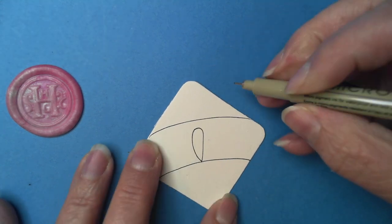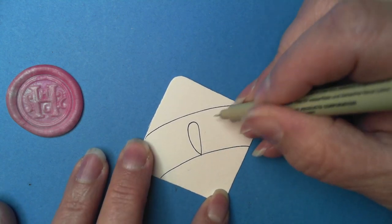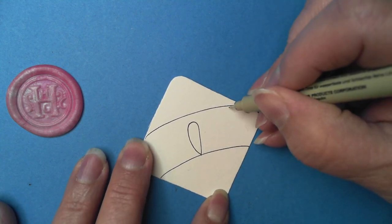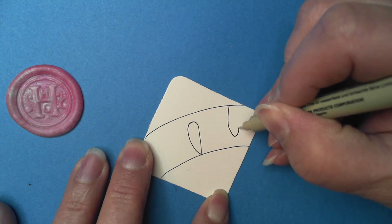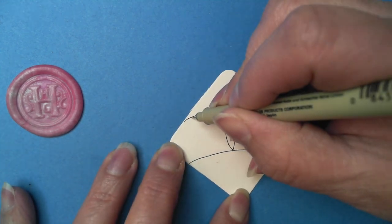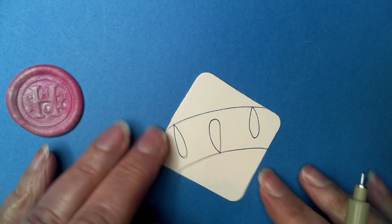We're going to alternate, so I'm doing this one from the bottom, then I'm going to just a little ways away do one from the top, we'll do one from the top over here, and however far apart you want to spread them.